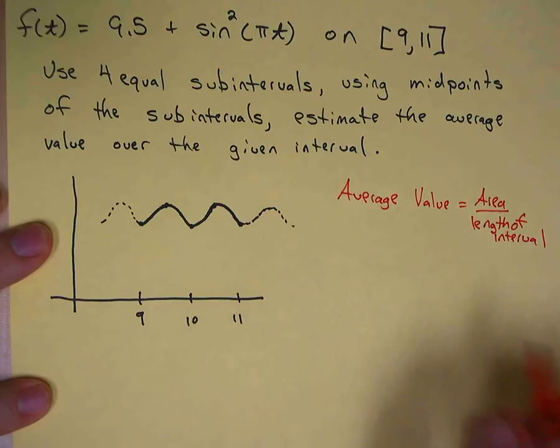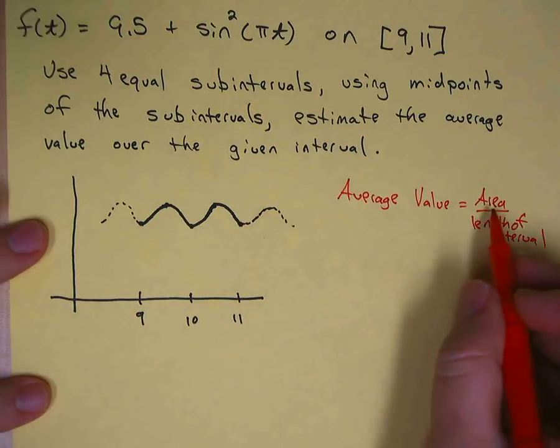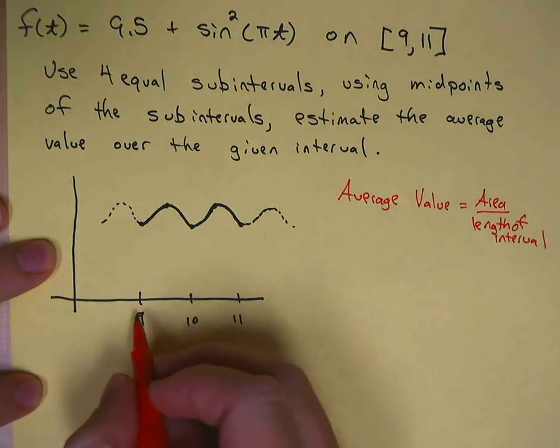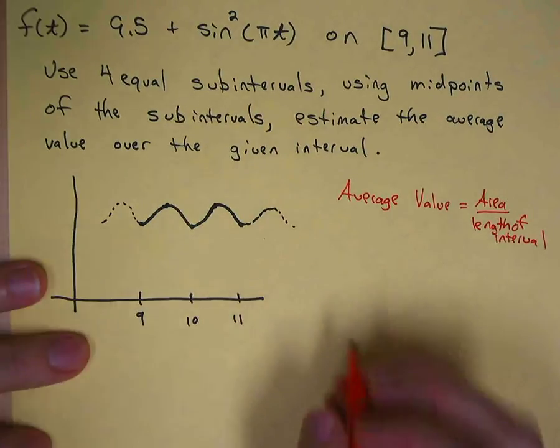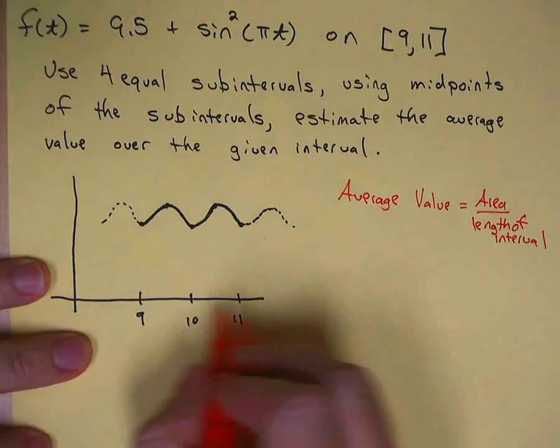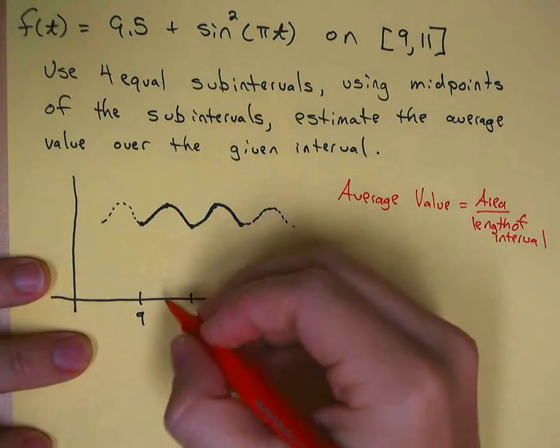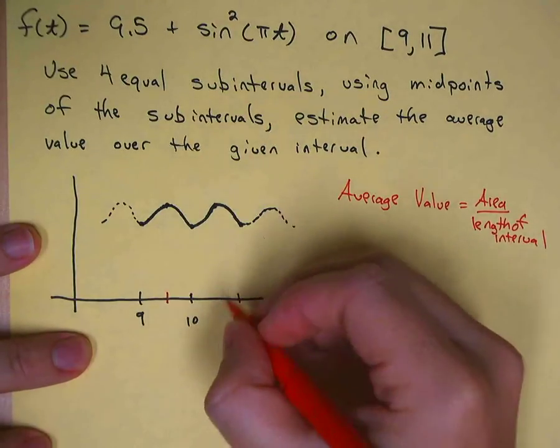The hard part is going to be to find the area. We're going to do that using the midpoints with four equal subintervals. The length of this interval is 2, so if there's four subintervals, each interval is going to have to be half in length.